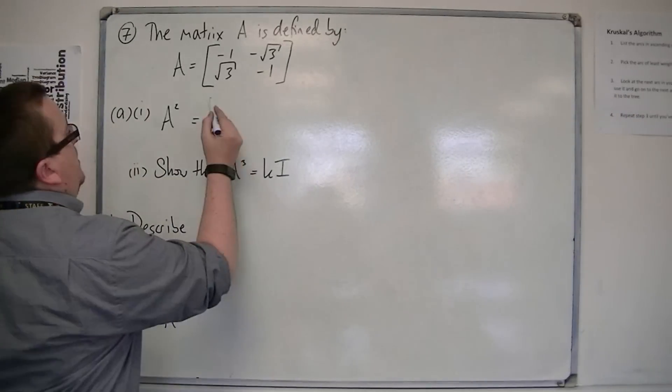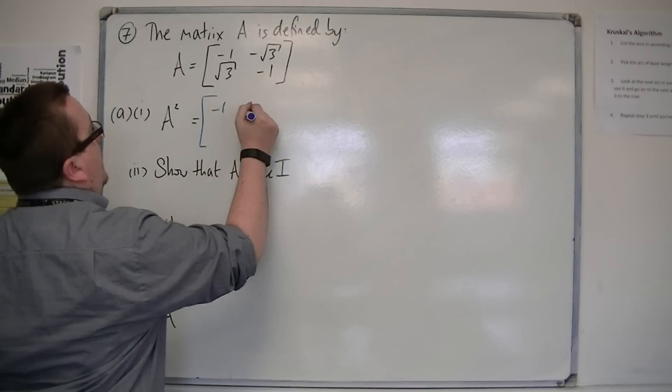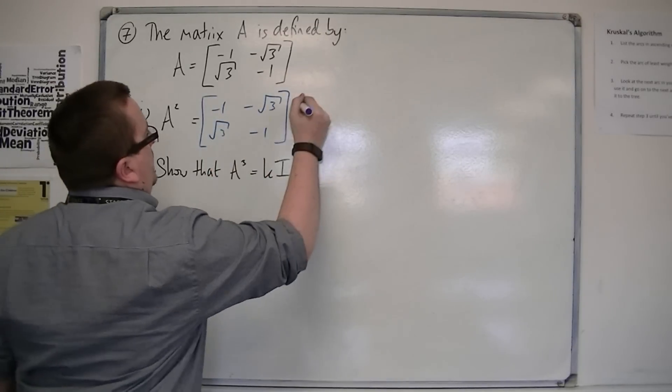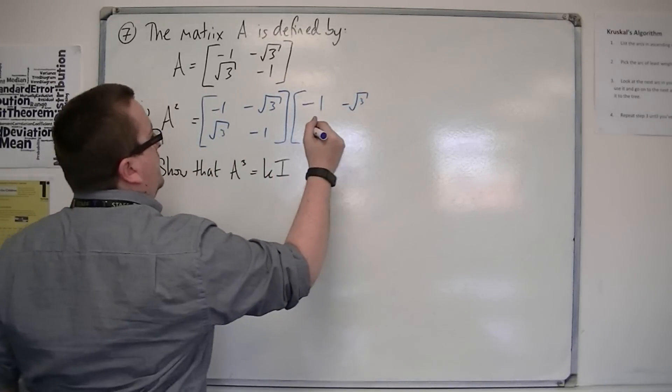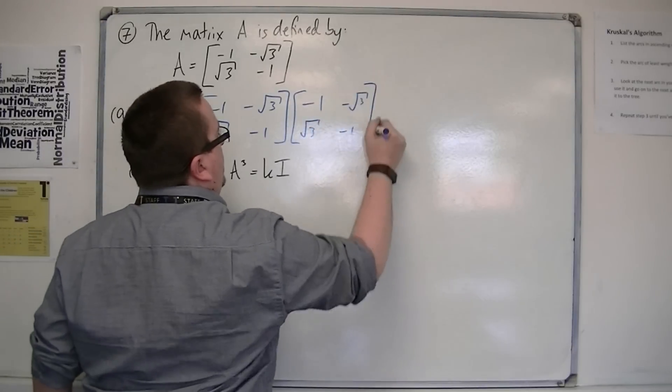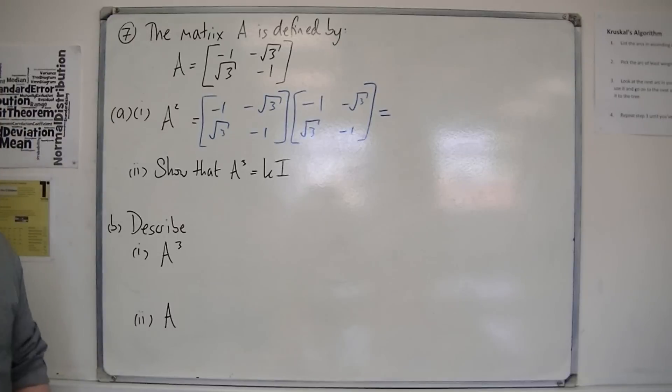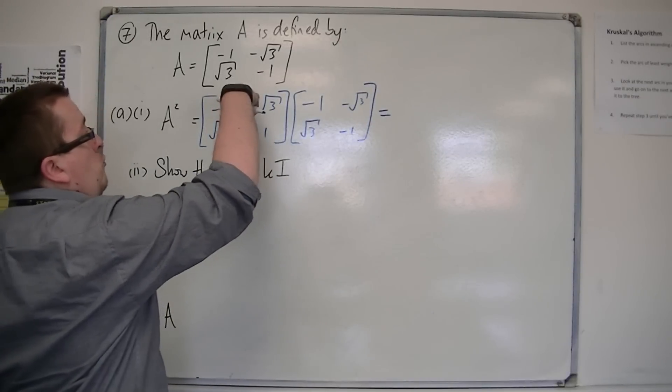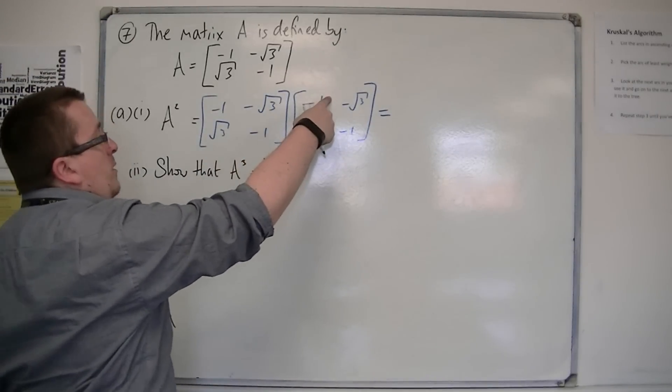So A squared is going to be found by multiplying A by itself. So write one next to each other, like so. And now, when you're multiplying matrices, remember that you're multiplying the row of the first one by the column of the second.